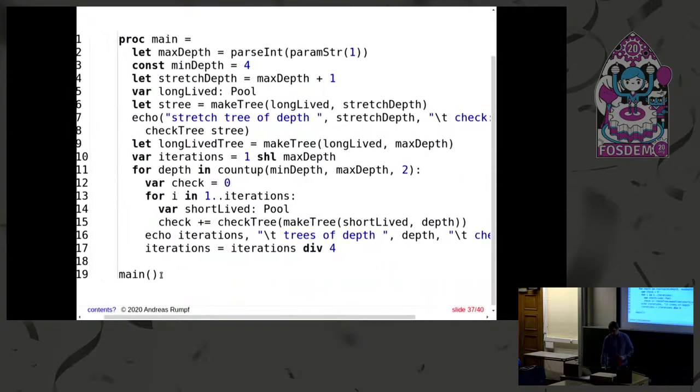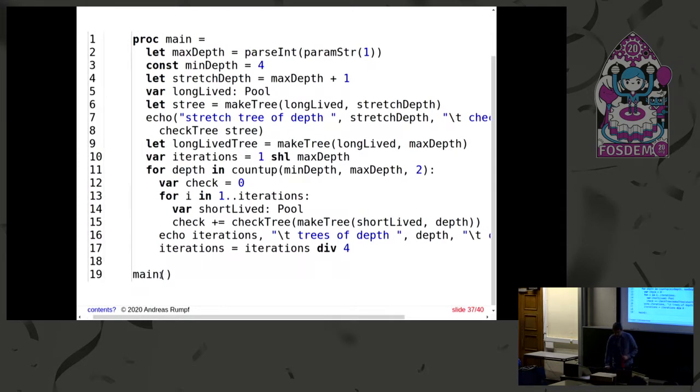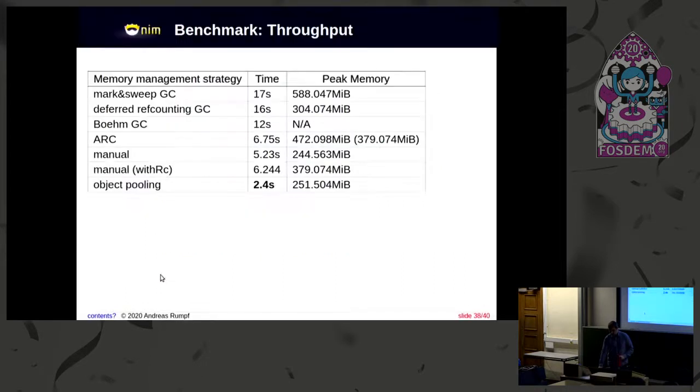And now, it's a bit easier to use because these pools are freed for us afterwards, automatically. And in this case, I had to make two pools, like one for the long-lived data and one for the short-lived data. So you can see this in line five and 14. And the question is, how does it perform? So that's the result. It's still much faster, over a factor of two performance improvement. And memory consumption is roughly the same.